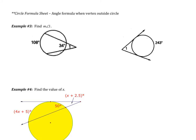Now we're moving on to our next formula for the formula sheet: the angle formula when the vertex is outside the circle. If the vertex is outside the circle, the angle is equal to one half of the big arc minus the little arc.